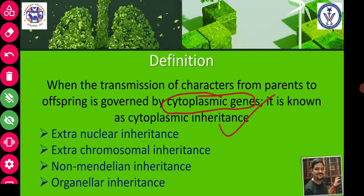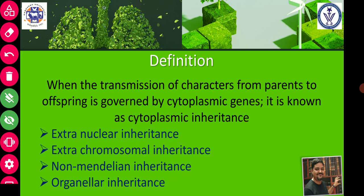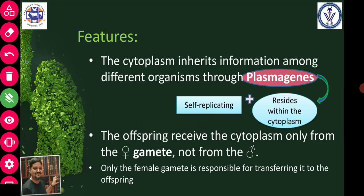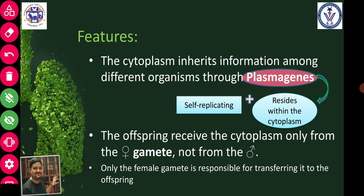There are several synonyms or other names for cytoplasmic inheritance, which include extra-nuclear inheritance, extra-chromosomal inheritance, non-Mendelian inheritance, and organelle inheritance, among others. Now, what are the features of extra-chromosomal inheritance? As we know, the cytoplasm inherits information among different organisms.